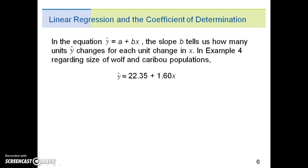In the equation y-hat equals a plus bx, the slope b tells us how many units y-hat changes for each unit change in x. In example 4 regarding size of wolf and caribou populations, our least-squared line is y-hat equals 22.35 plus 1.60x.